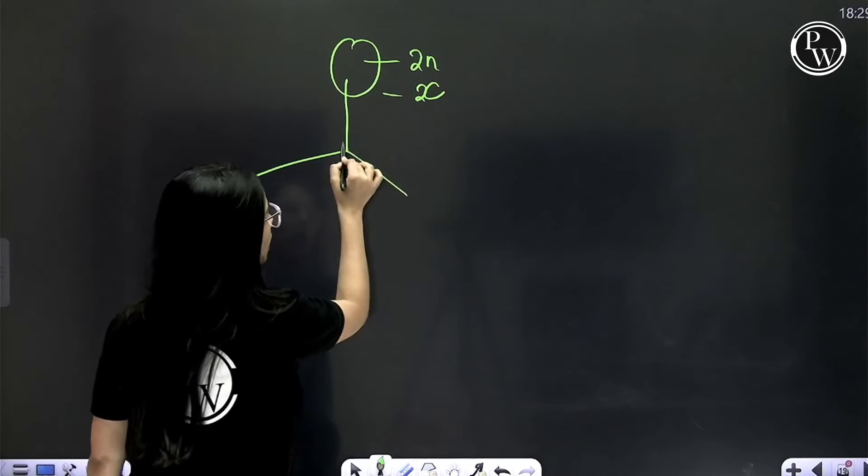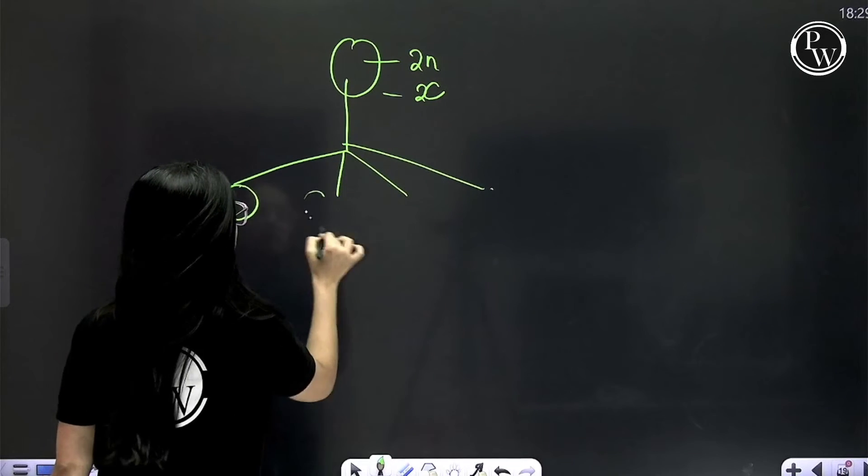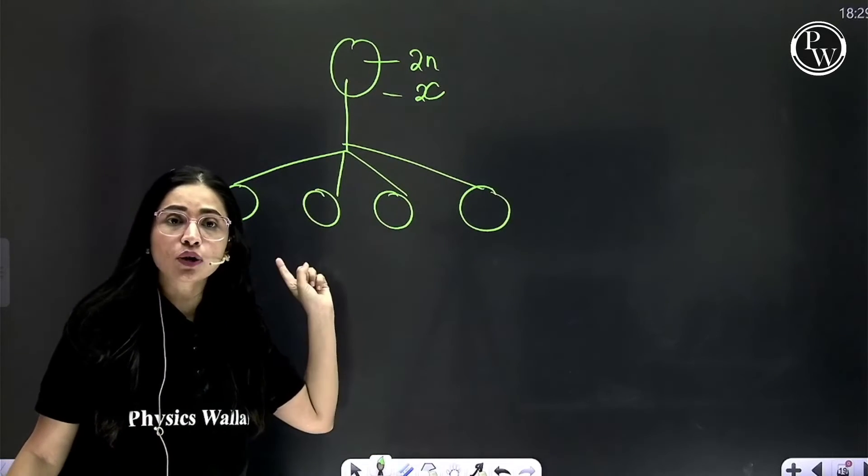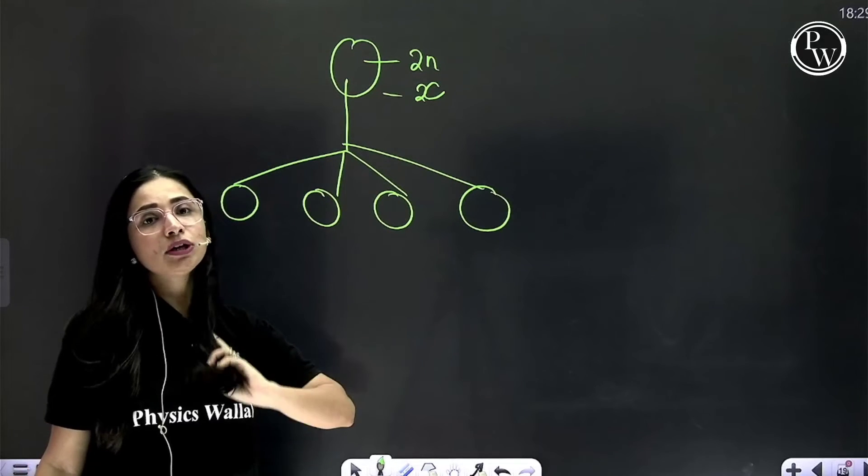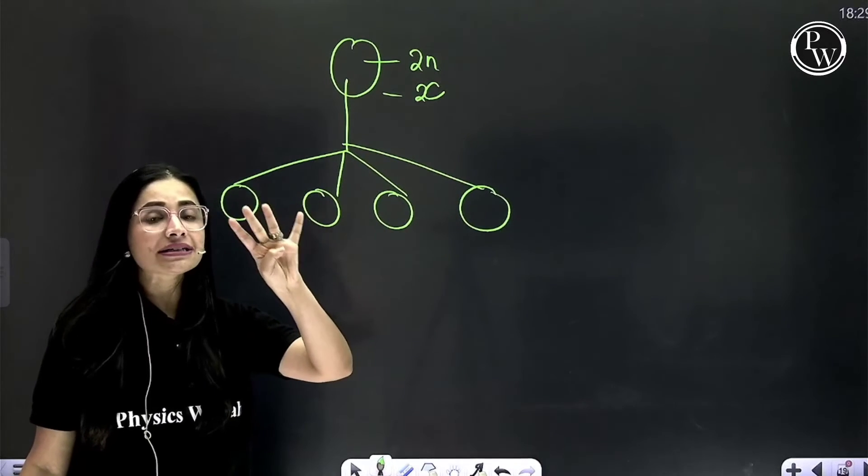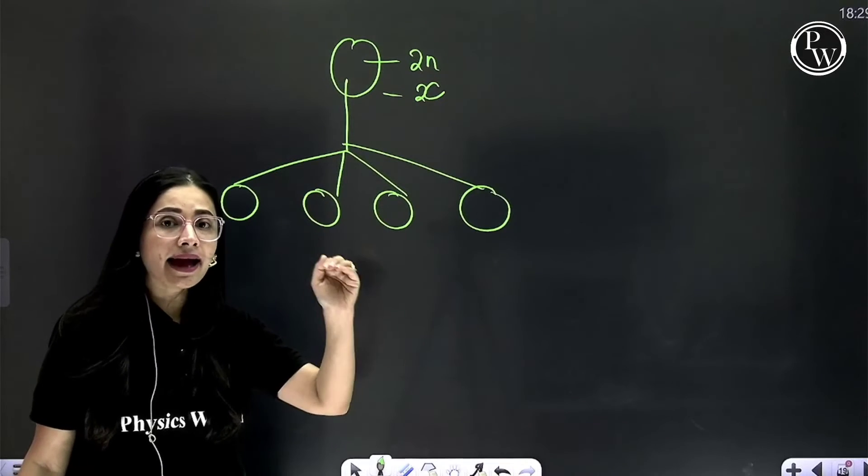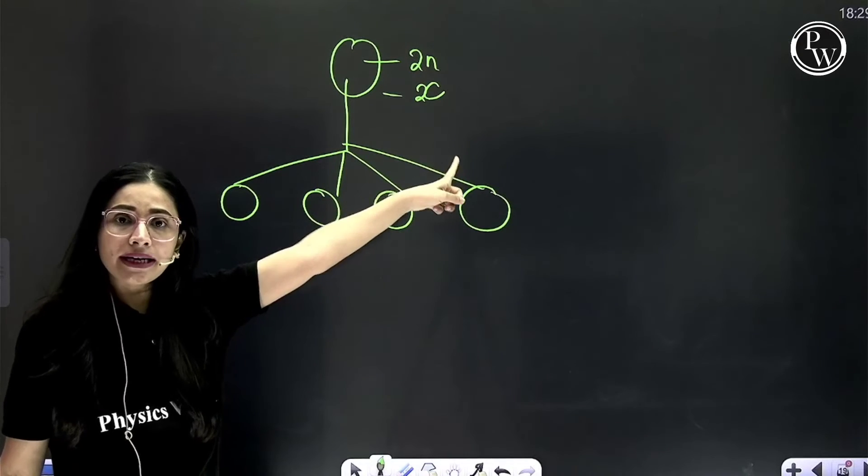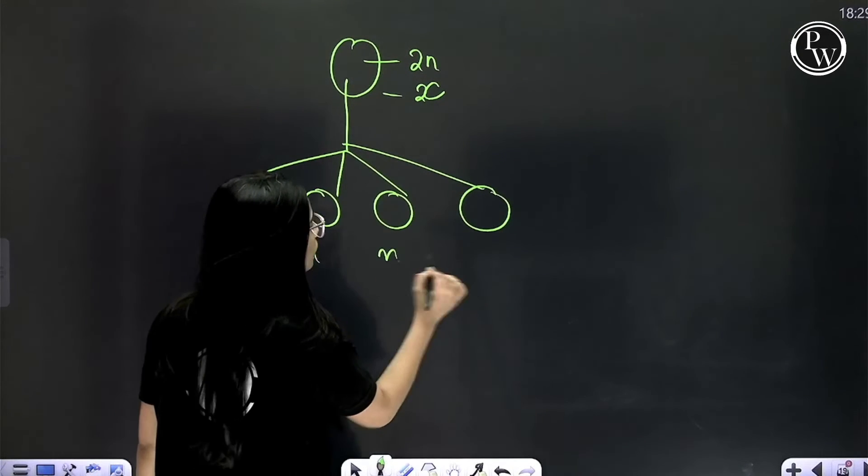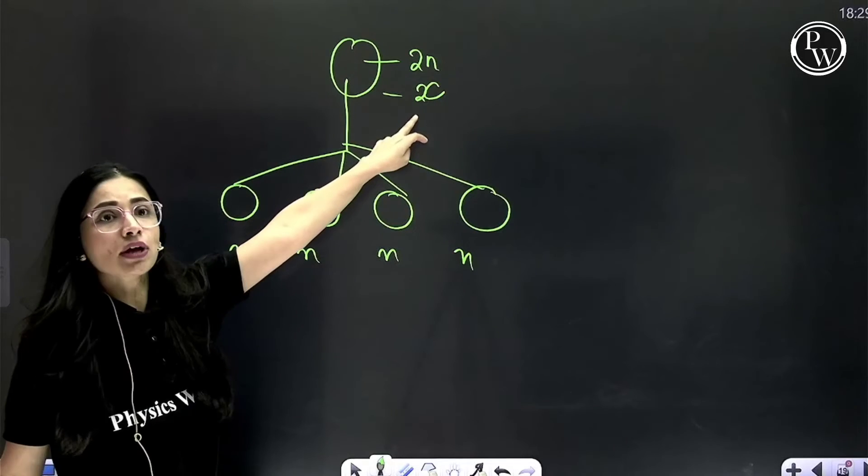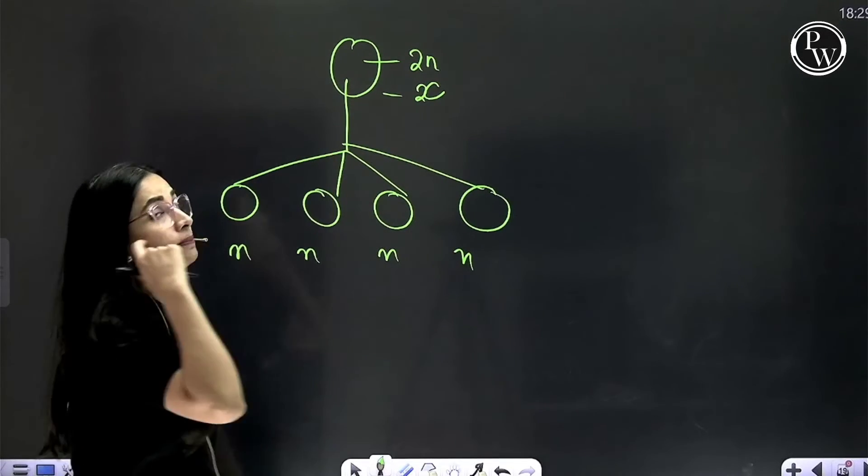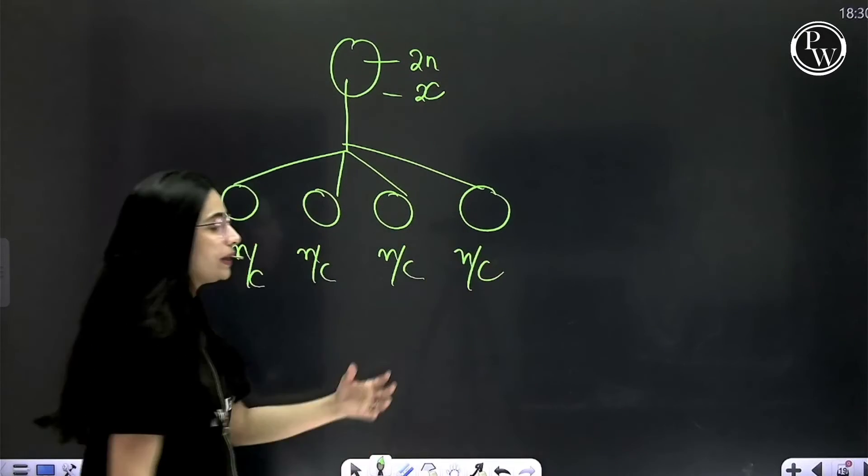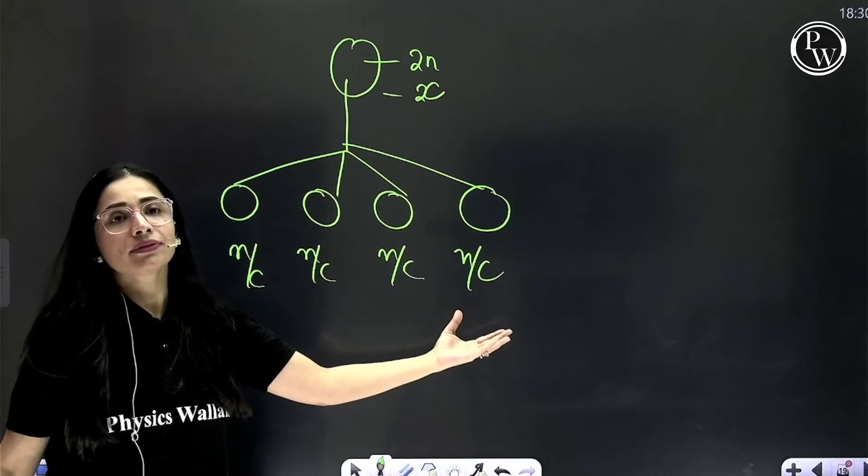First of all, four daughter cells will be obtained. In mitosis, two daughter cells are obtained, but in meiosis, four daughter cells are obtained, each having half the number of chromosomes. So if the parent cell is diploid, hence the daughter cells will be haploid. And half the amount of DNA—if the initial amount is 2C, then each daughter will have only half the amount of DNA.